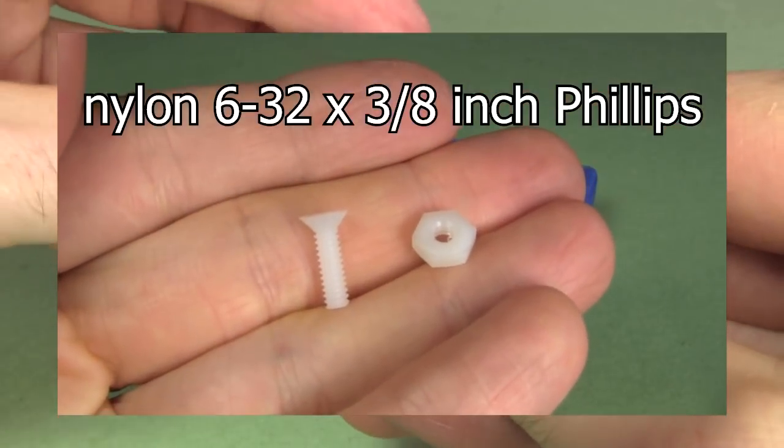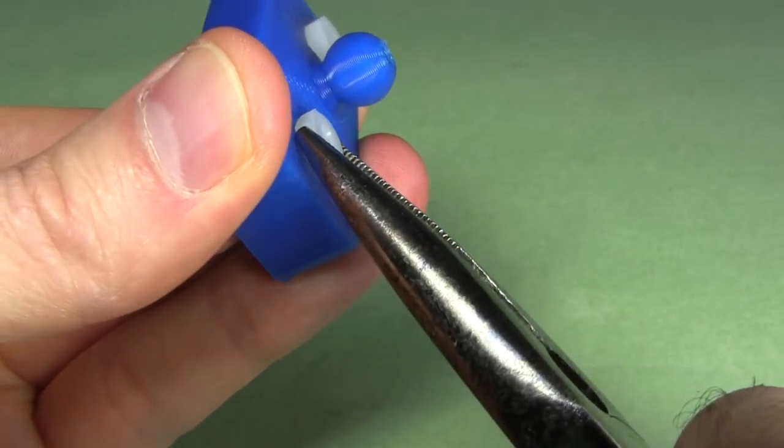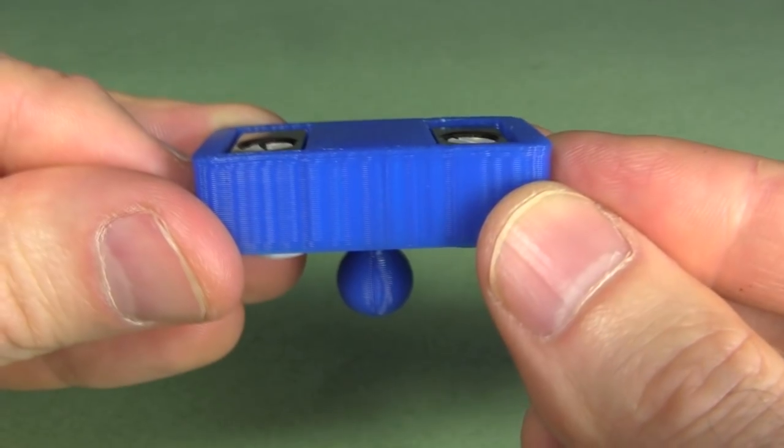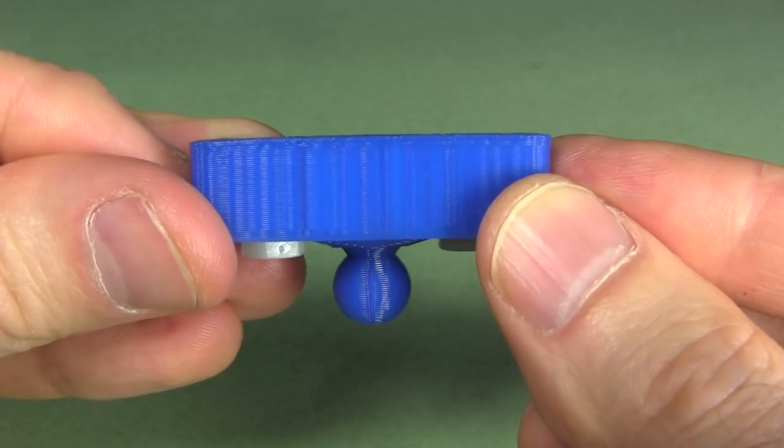To hold them in place, I use nylon machine screws and nuts. I get them from the miscellaneous hardware section at Home Depot. I designed it so that the magnets would not be sticking out, since neodymium magnets chip and break easily if banged hard.